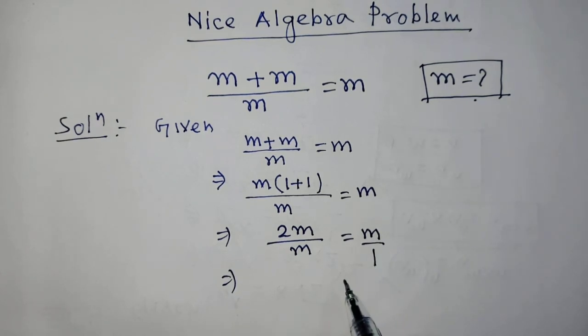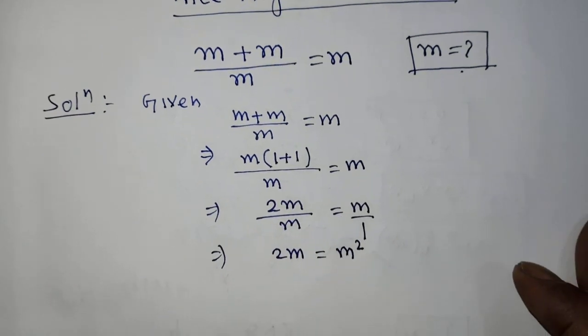According to the cross multiplication rule, we can write from this equation 2m equals m to the power 2.